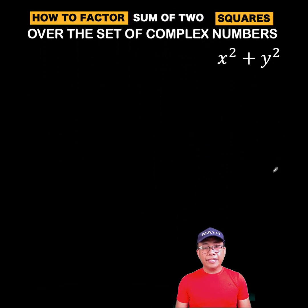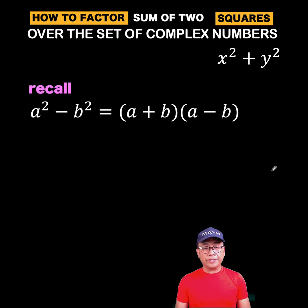Let's begin by recalling the difference of two squares. We know that a squared minus b squared is equal to the quantity a plus b times the quantity a minus b. Let us also recall that i is equal to the square root of negative 1 and i squared is equal to negative 1.